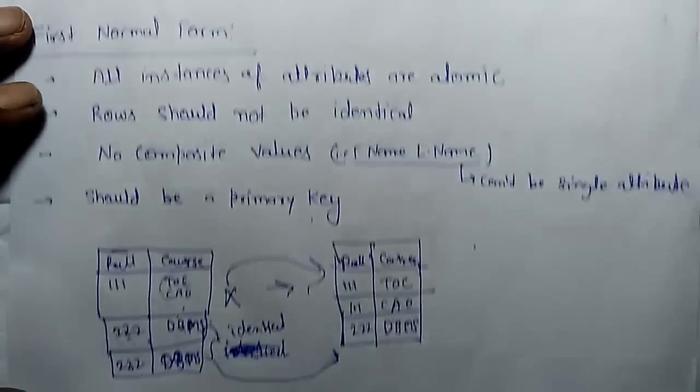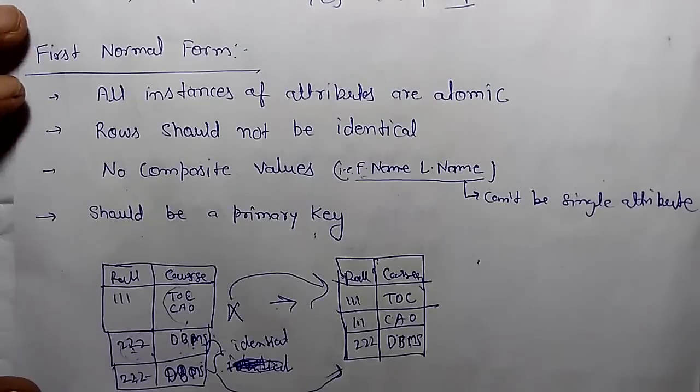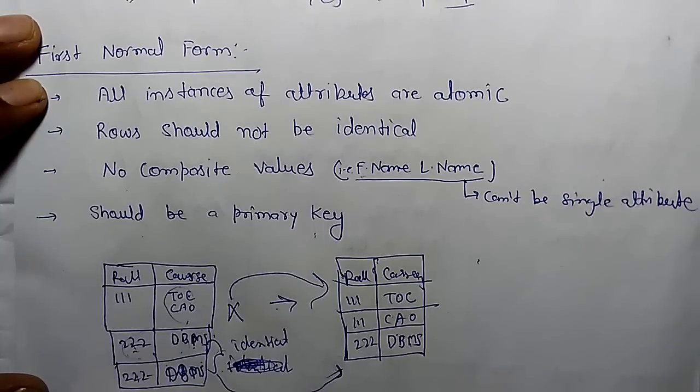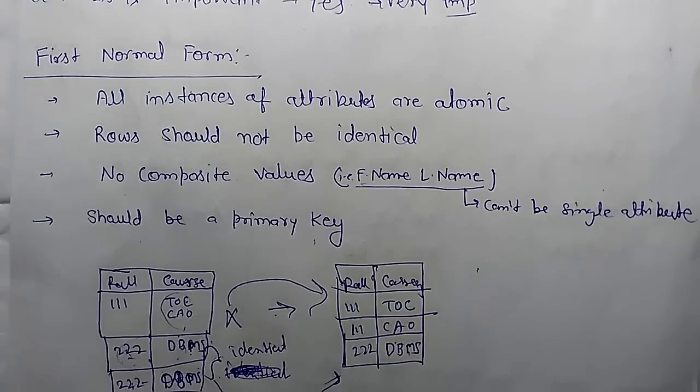So this is the definition of first normal form. All instances of attributes are atomic, rows should not be identical, no composite values, and there should be a primary key. Thank you.